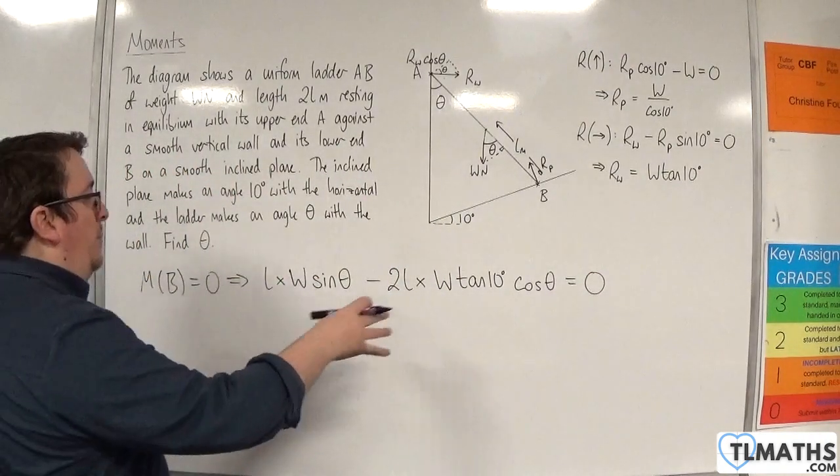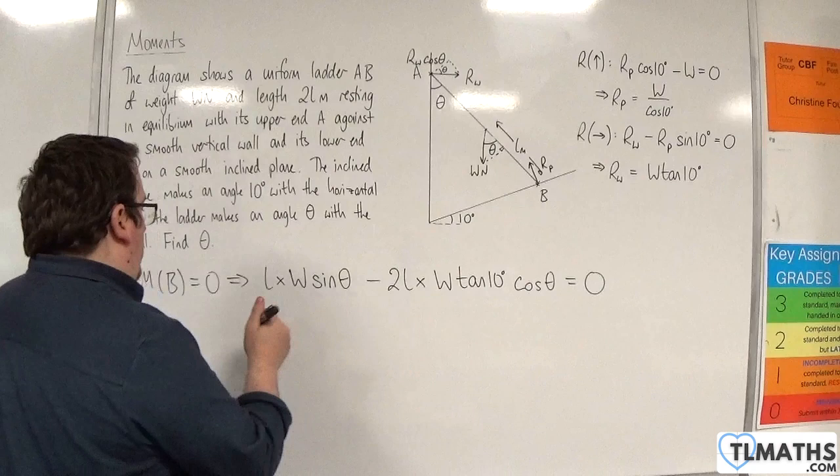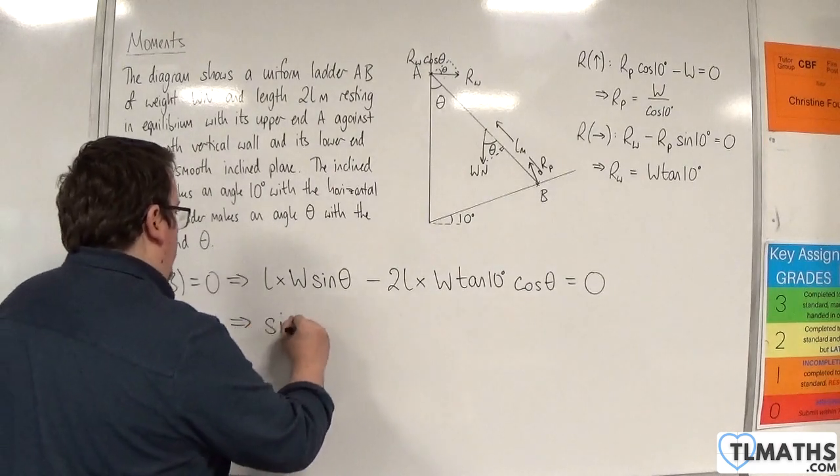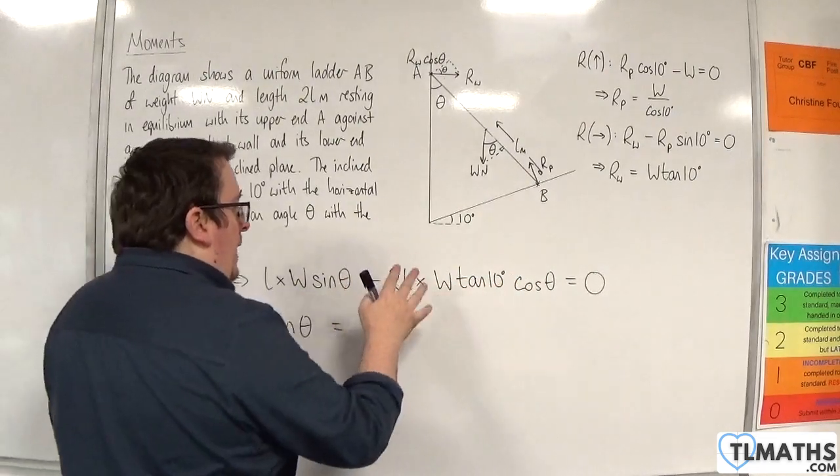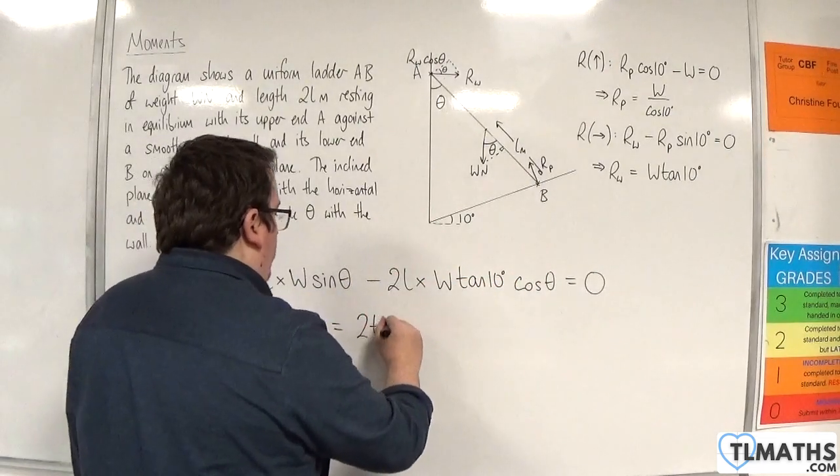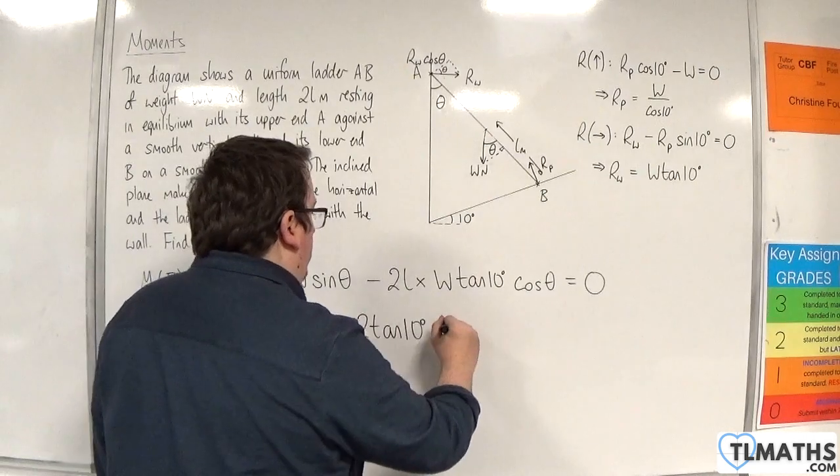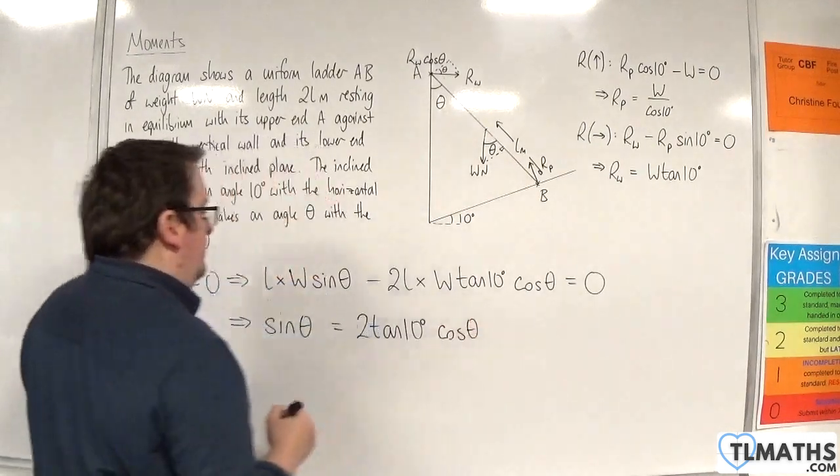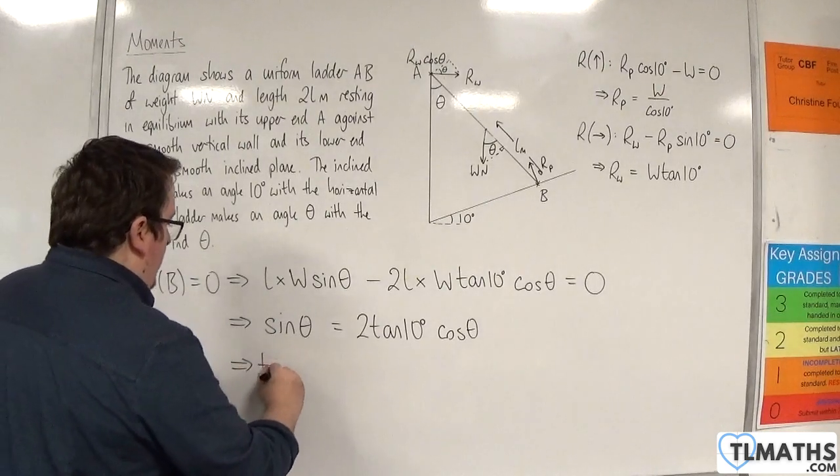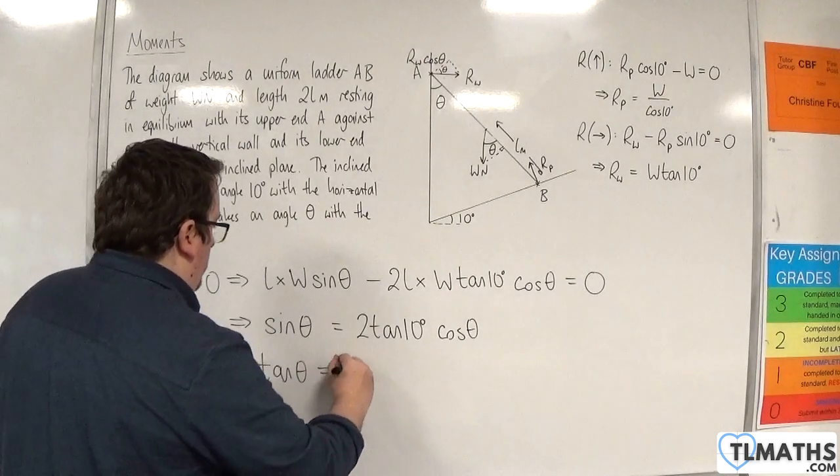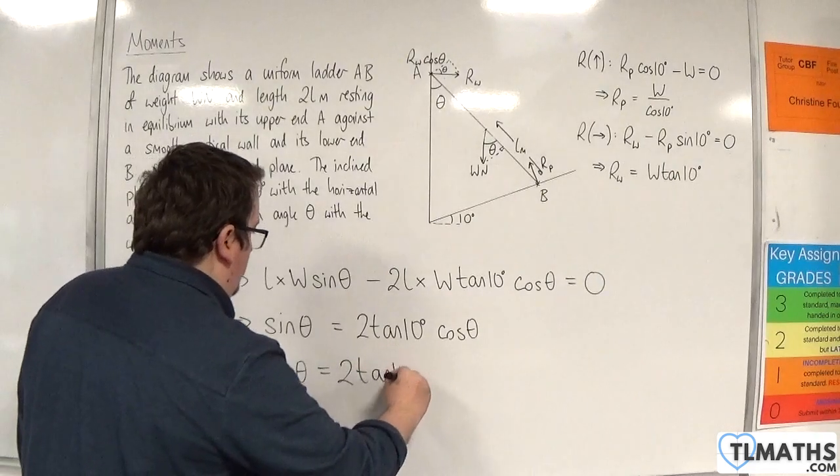So, the L and the W cancel, so I can rewrite that as sine of theta is equal to 2 tan of 10 degrees cosine theta. If we divide through by cosine theta, then tan of theta must be equal to 2 tan of 10 degrees.